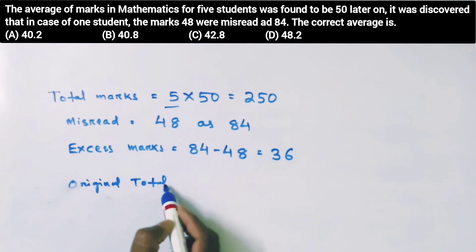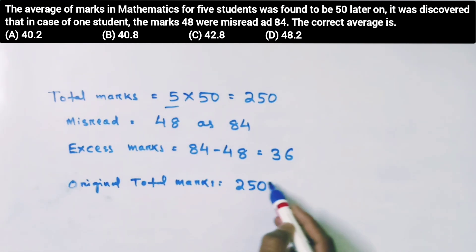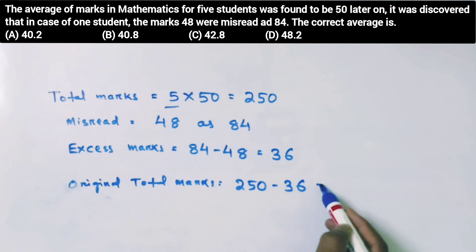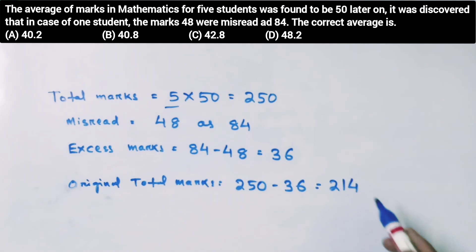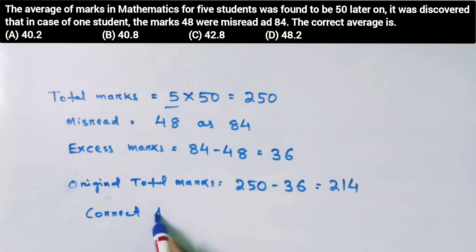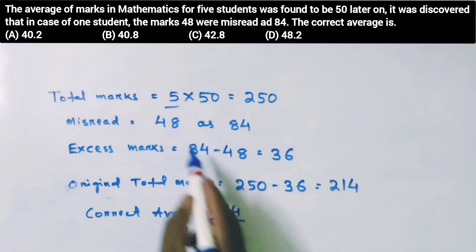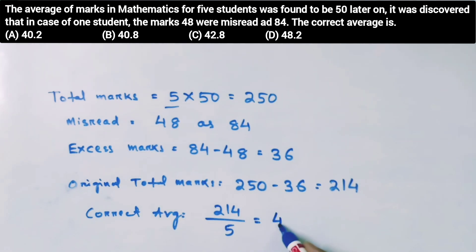The correct total marks is equal to 214. So, the correct average is 214 by 5.